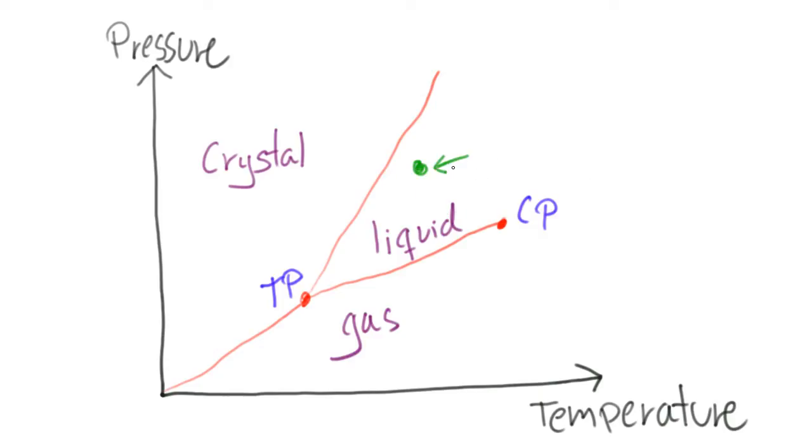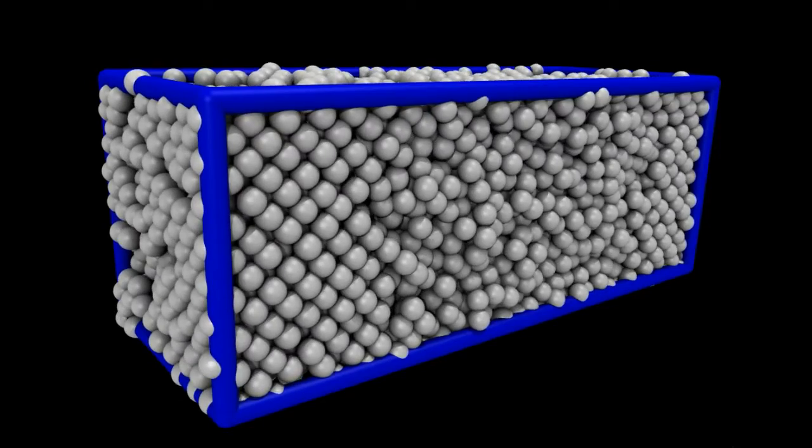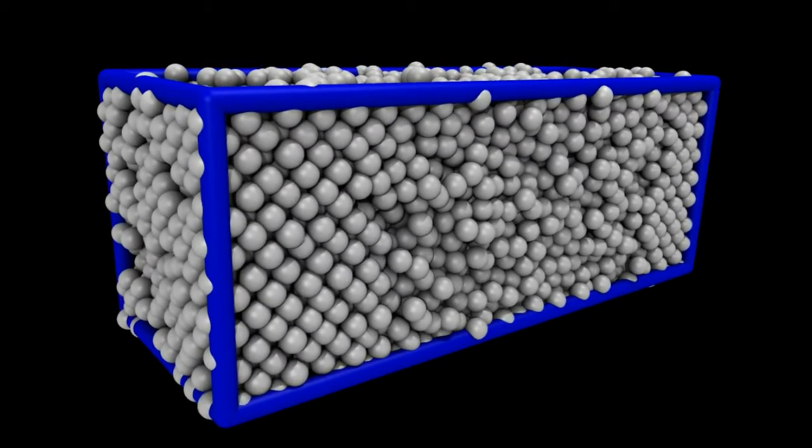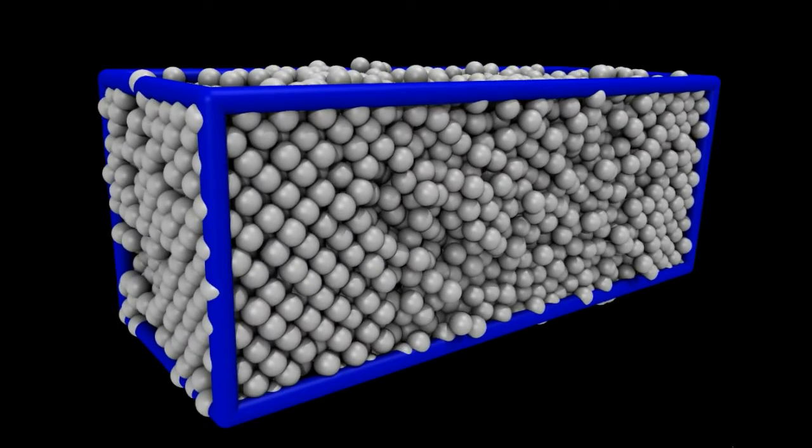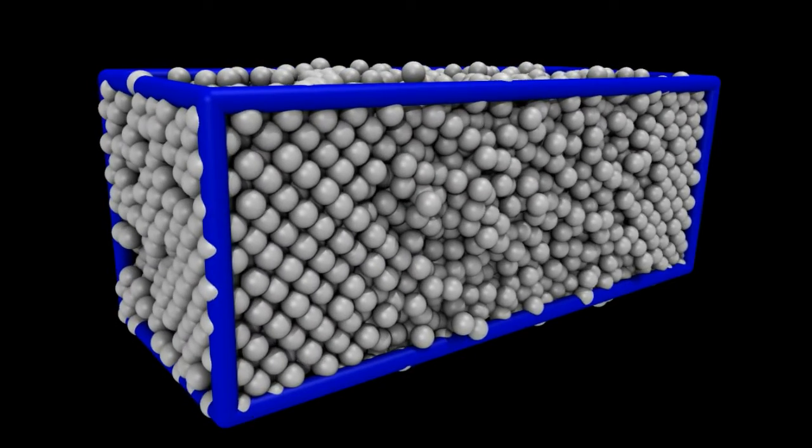Assume that the two-phase simulation is done at a temperature and a pressure where the liquid is thermodynamically stable while the crystal is metastable. Then the crystal would melt, the interfaces would move towards each other and finally the entire system would end up in the liquid state.